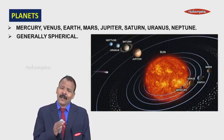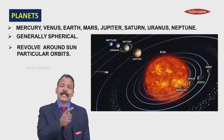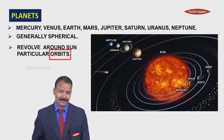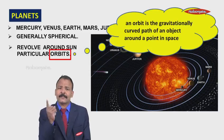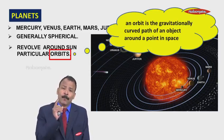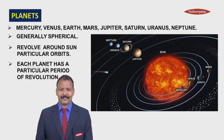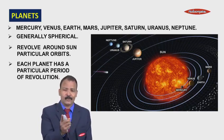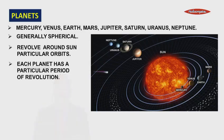Now they all are generally spherical, that is they have a ball-like shape. Next one is they all revolve around the Sun in a particular orbit. Orbits are these white lines. What are orbits? An orbit is a gravitationally curved path of an object around a point in space. Here that point is the Sun. Each planet has a particular period of revolution, that is it completes one revolution around the Sun in a particular period, like Earth completes in 365 days. So children, with this we conclude.